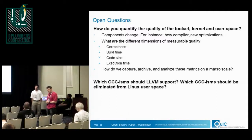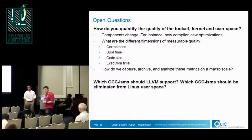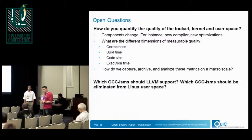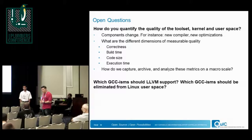From the audience: this is what's being attempted in Debian but it takes a long time to set up because there are so many test suites to collect output from. There's the Firehose format from Fedora, a standard way to store test suite results. Projects like Cppcheck and others have exporters. In Debian they have build time, code size, execution time, and correctness metrics — though correctness depends on whether packages actually run their tests.